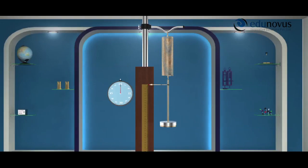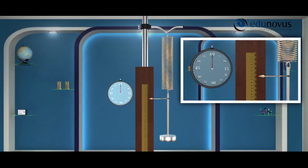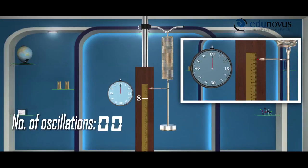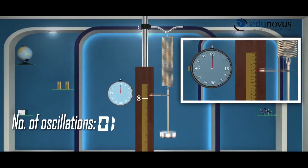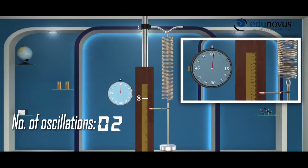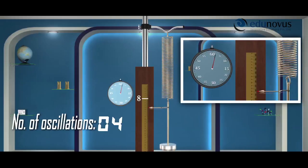Suspend 50 grams of weight at the lower end of the spring. Wait until the pointer comes to rest and note down its reading—here it is 8 centimeters. Note it in the observation table. Now pull the slotted weight a bit downwards and release. The weight begins to move up and down and oscillates vertically.